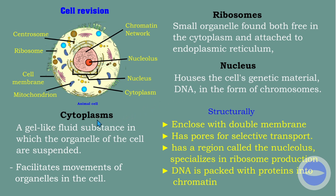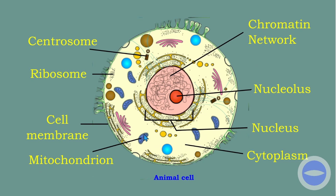To remind you about cytoplasm: cytoplasm is a gel-like fluid substance in which the organelles of the cell are suspended. Cytoplasm also facilitates the movement of the organelles in the cell. Cytoplasm is this yellow part you see inside the cell — it's a fluid-like substance and the organelles are suspended in it.